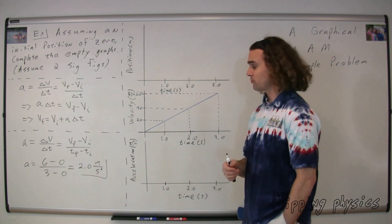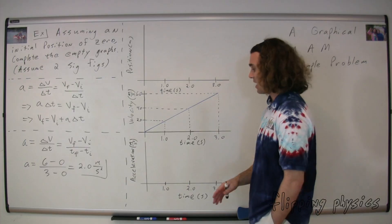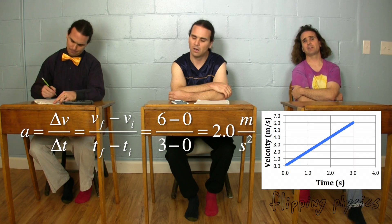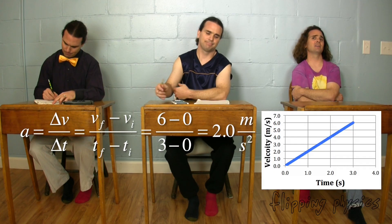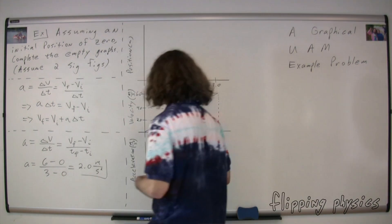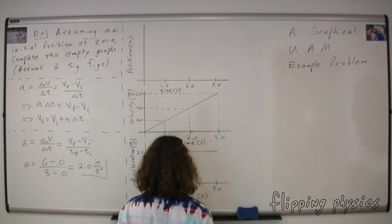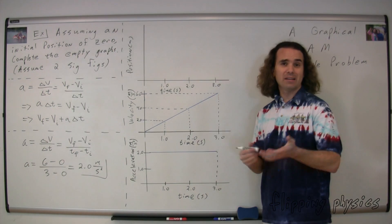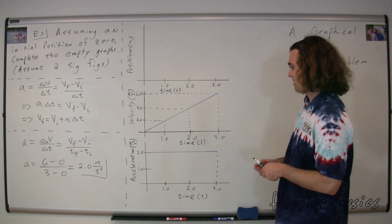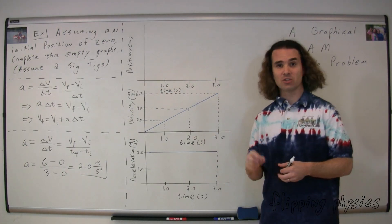And how do we draw a constant acceleration of 2.0 meters per second squared on our acceleration versus time graph? Because the acceleration doesn't change, we draw a horizontal line at the acceleration value of 2.0 meters per second squared. Great. Now all we need is the position as a function of time graph. We already have the initial position from the problem statement — the initial position is zero.